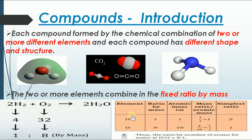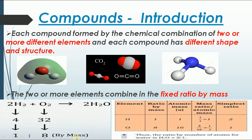Now for the fixed ratio by mass: when two moles of hydrogen react with one mole of oxygen, it gives two moles of water. The atomic mass of hydrogen is 1, and there are four hydrogens total, so 4 × 1 = 4. The atomic mass of oxygen is 16, and there are two oxygens, so 2 × 16 = 32. Dividing both by 4 gives 1 and 8. So the mass ratio is 1:8 — the fixed ratio by mass in which hydrogen and oxygen combine to make water.